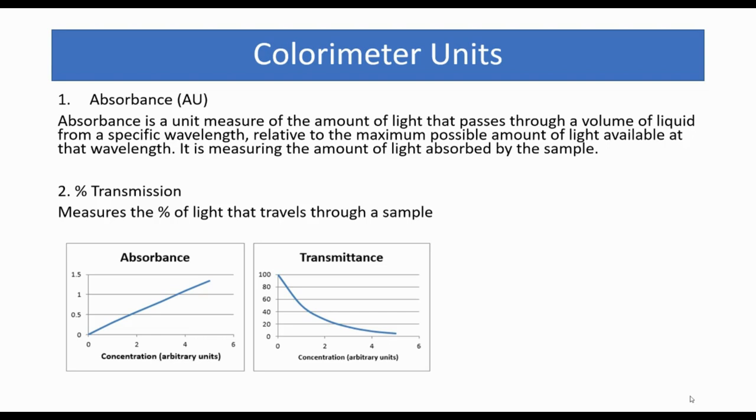With absorbance, as the concentration increases, you get a higher absorption. Whereas with transmittance, the greater the concentration, the lower the percentage of light that travels through the sample.